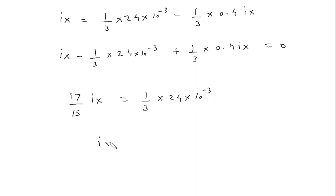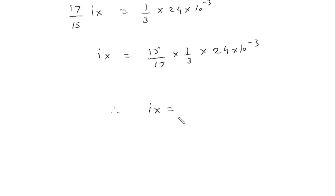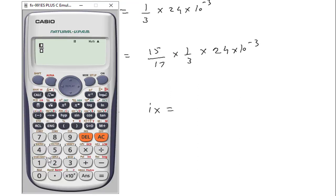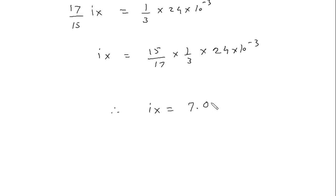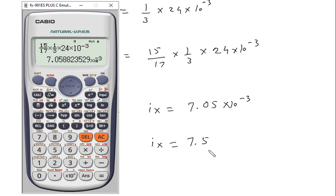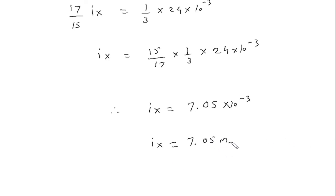Therefore Ix equals 15 by 17 into 1 by 3 into 24 into 10 raised to minus 3. So therefore Ix equals 7.05 into 10 raised to minus 3, or Ix equals 7.05 mA. So this is the value of Ix.